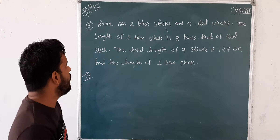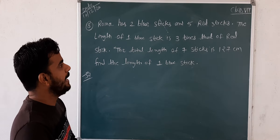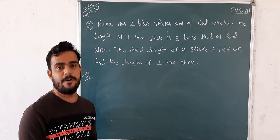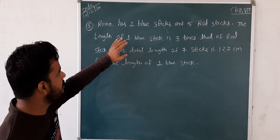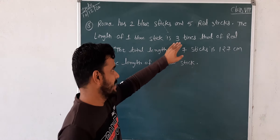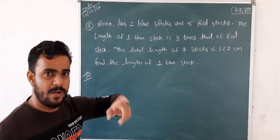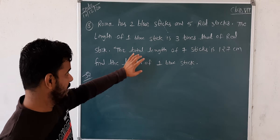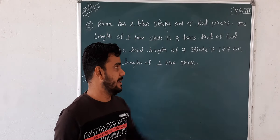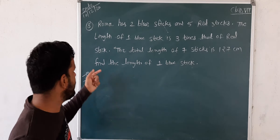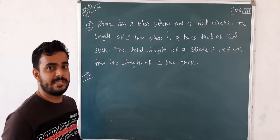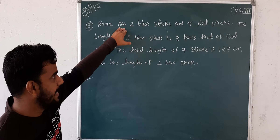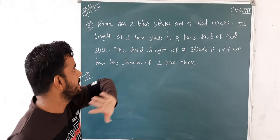The next, 8th question is: Roma has 2 blue sticks and 5 red sticks. The length of one blue stick is three times that of the red. The total length of the seven sticks is 127 cm. Find the length of one blue stick.